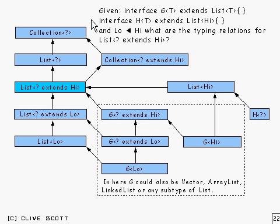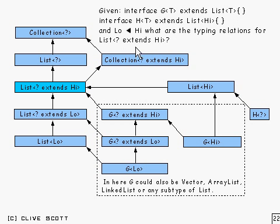Let's have a look at this example. We're given that interface G<T>, this generic interface, extends List<T>. We're also given that H<T>, this generic interface, extends List<High>. And as usual, Low is a subtype of High. The question is: what are the typing relationships for a List of something which extends High? Now the first thing to note is that 'High' here is a concrete type, not a type parameter. So that's different to the case above where both are type parameters, and that makes a big difference, as we'll see in a minute.